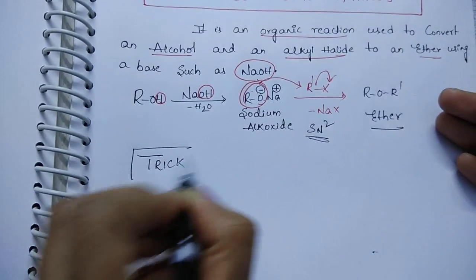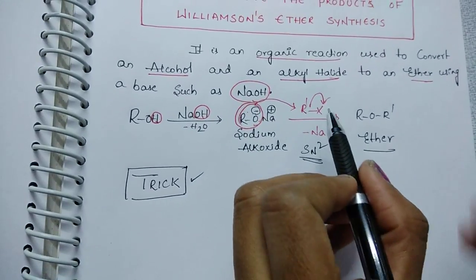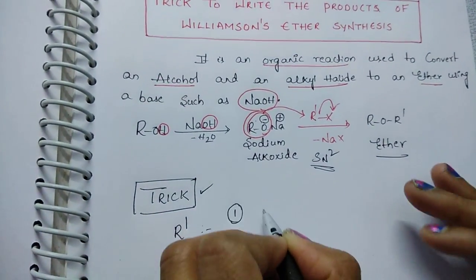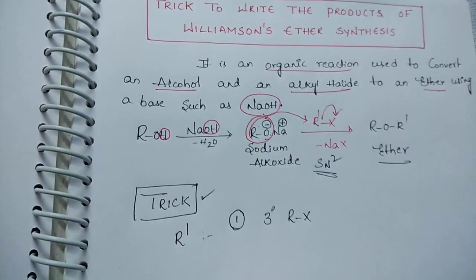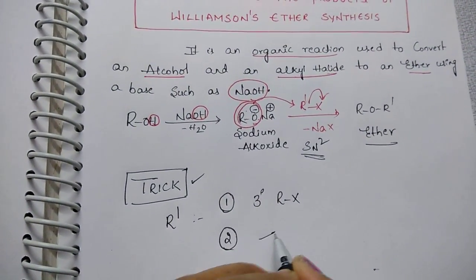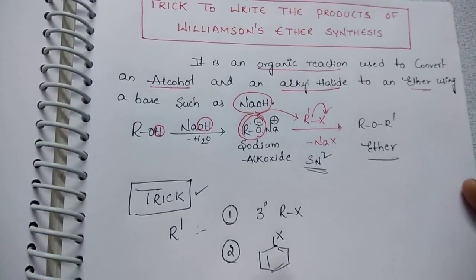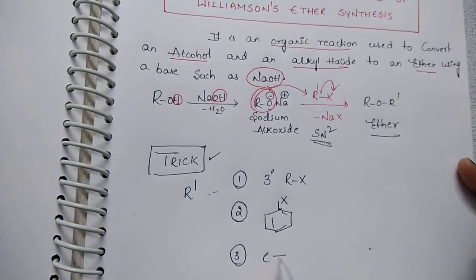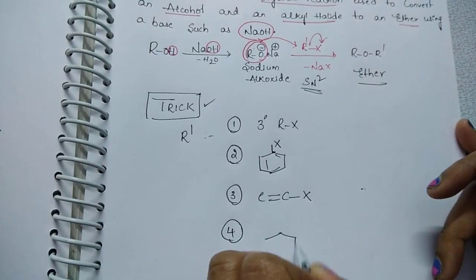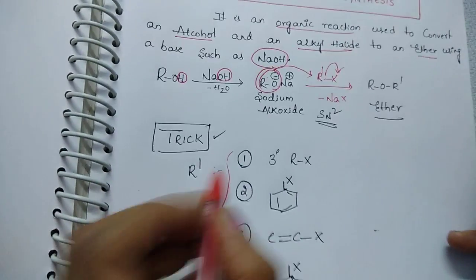Now I am going to discuss the trick. The alkyl halide plays an important role here. The R′ group of the alkyl halide should not be a tertiary alkyl halide. The alkyl halide should not be an aryl halide, should not be a vinyl halide, and should not be a bridgehead halide. These are the most important things to remember while solving a question on Williamson ether synthesis.